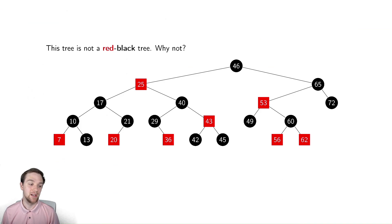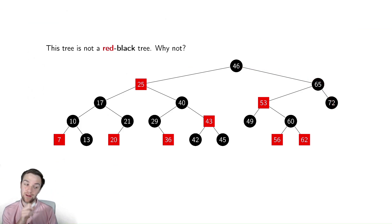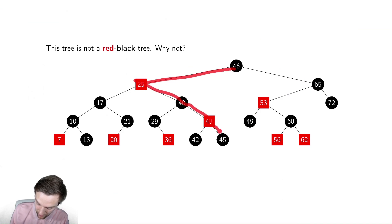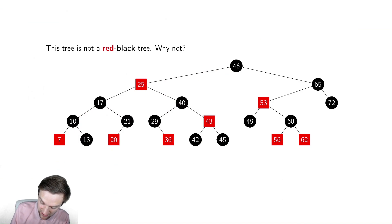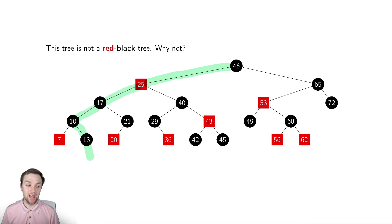Almost certainly our violated property is going to be the number of black nodes. I see an easy one over here. This path on the right has one, two, three, four black nodes, which means every single path needs to have four. Checking paths on the right: one, two, three, four — repeatedly four for several paths. But then one path has one, two, three, four, five. So it's not a red-black tree because of this path over here — let me highlight it. That path has too many black nodes.